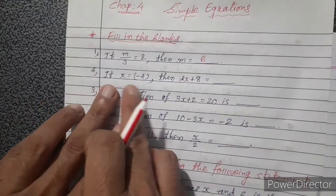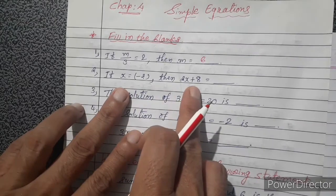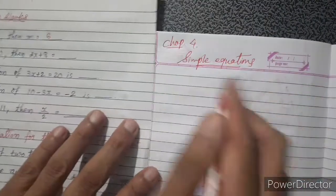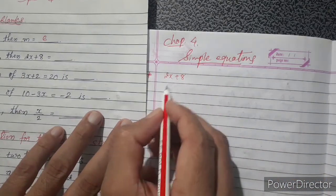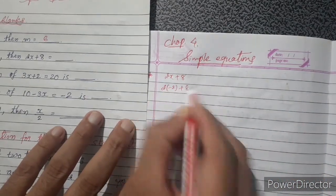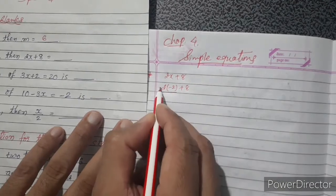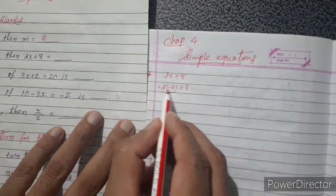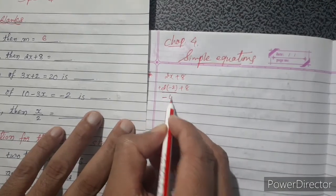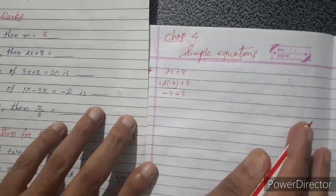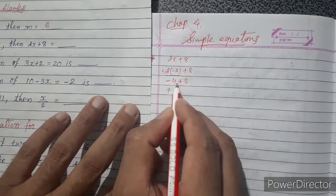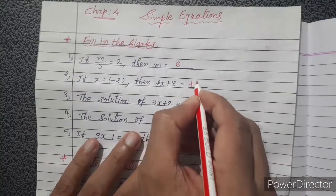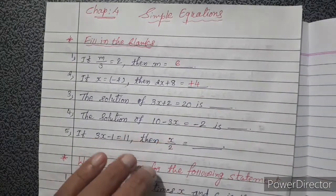If x equals minus 2, then what is 2x plus 8? We substitute: 2 into minus 2 plus 8. That gives minus 4 plus 8. Sign of the greater number is plus, so minus 4 plus 8 equals plus 4. Your answer is plus 4.